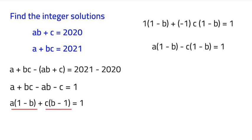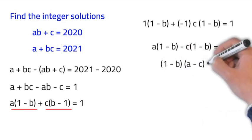So once we write that out, we'll have A times 1 minus B minus C times 1 minus B is equal to 1. Now that we've done that, we can factor out a 1 minus B from the entire thing. So we'll have 1 minus B times our remainder A minus C.